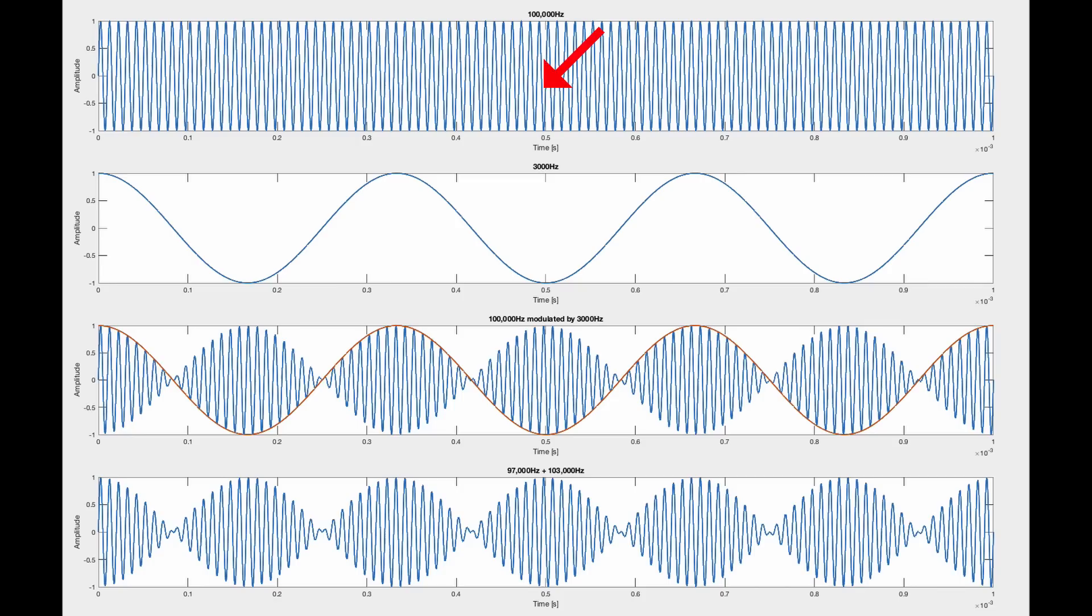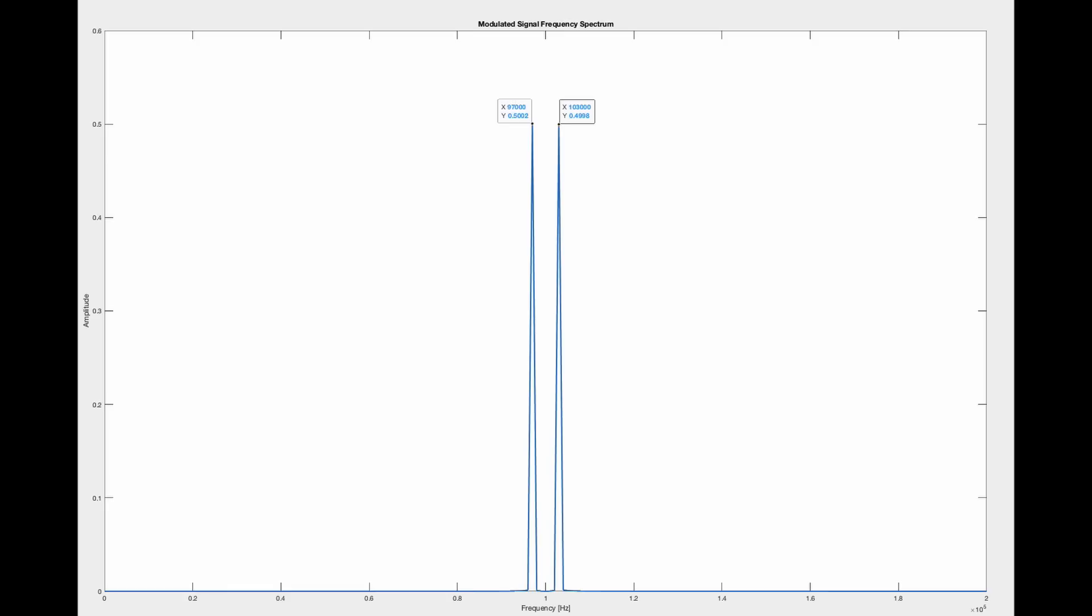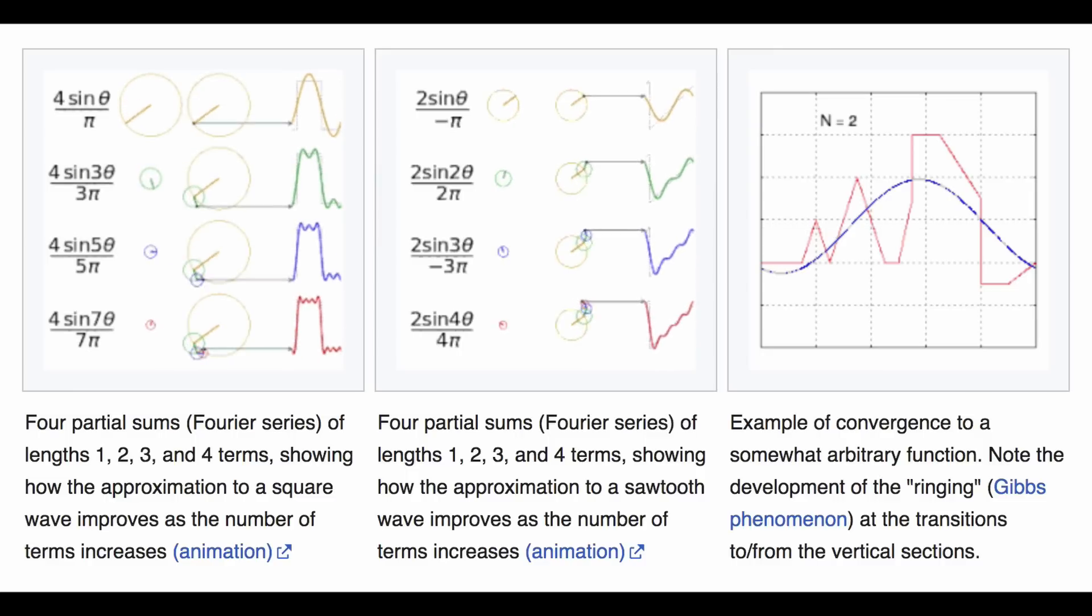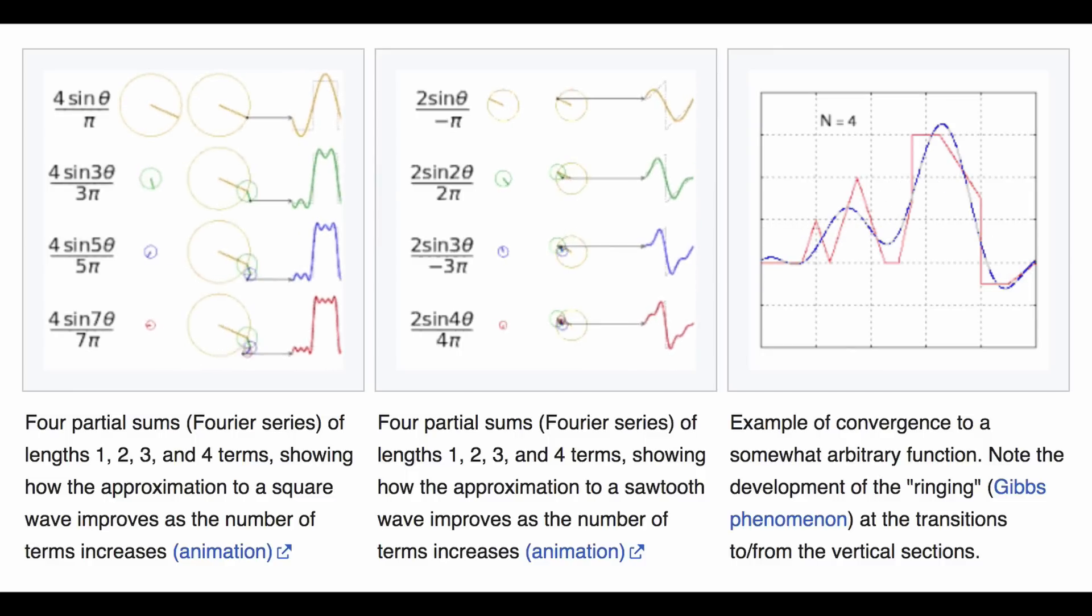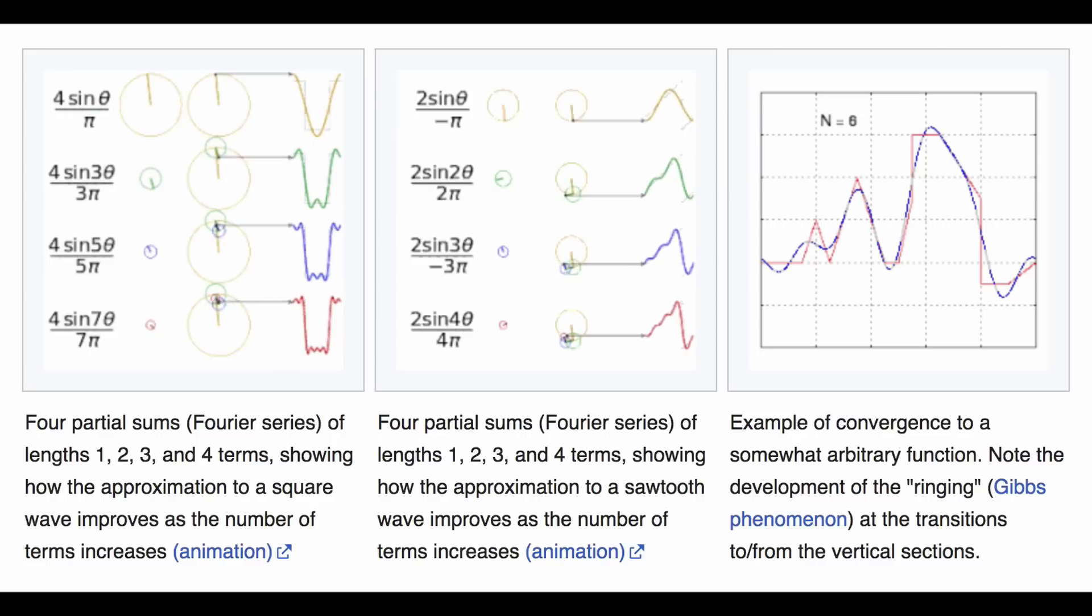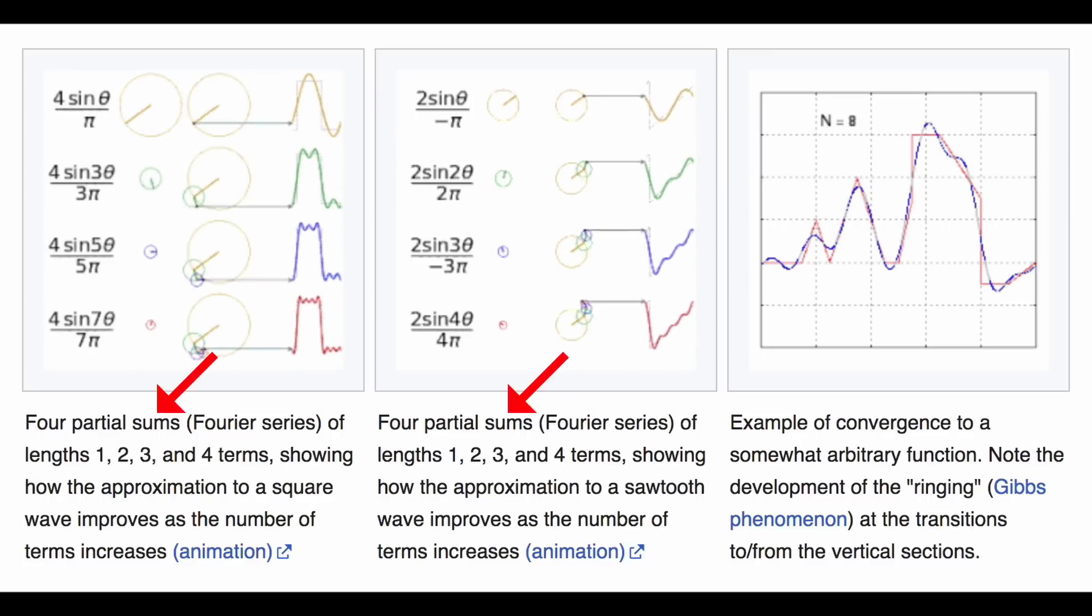If we modulate the 100,000 Hz signal with the 3000 Hz signal, we get something that looks like this. But if we do a Fourier transform on this, which is just fancy math talk for measure the frequency, we actually find we no longer have 100,000 Hz or 3000 Hz. Now we have a 97,000 Hz and a 103,000 Hz signal. When the Fourier transform is analyzing which frequencies are present in a signal, it's actually telling you which frequencies add up to get your signal.